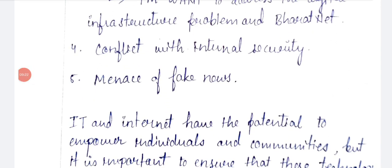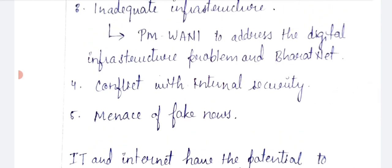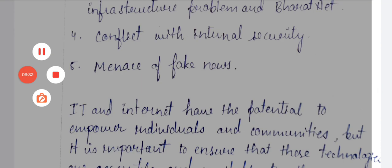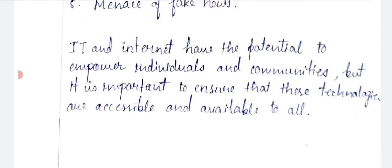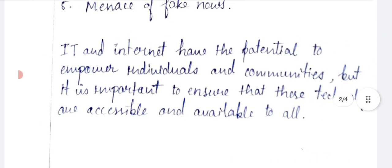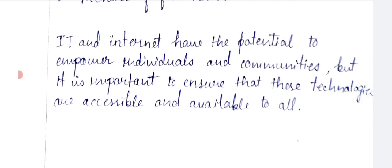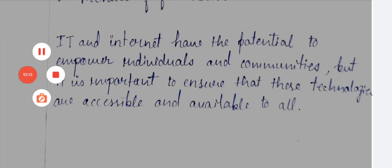The next challenge is conflict with internal security. Digital crimes and frauds are increasing — phishing and the menace of fake news are real threats. The so-called 'WhatsApp University' spreads false information, and without verifying it, people judge others — which is sometimes detrimental to the safety and security of our country. Finally, to conclude: IT and internet have great potential to empower individuals and communities, but it is important to ensure these technologies are accessible and available to all. Thank you.